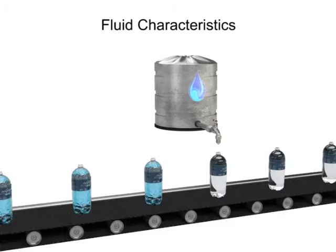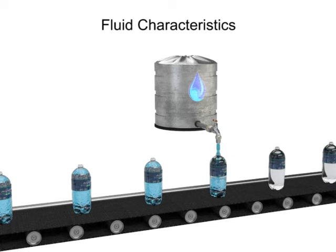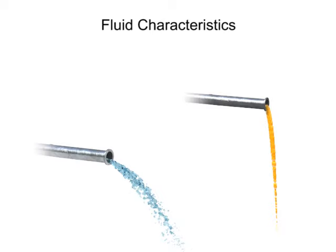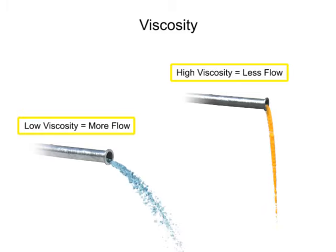Fluids used in mechanical systems come in many different types. The type of fluid chosen for a particular application depends on its characteristics. One of the most important characteristics of a fluid is its viscosity. Viscosity is defined as a fluid's resistance to flow.